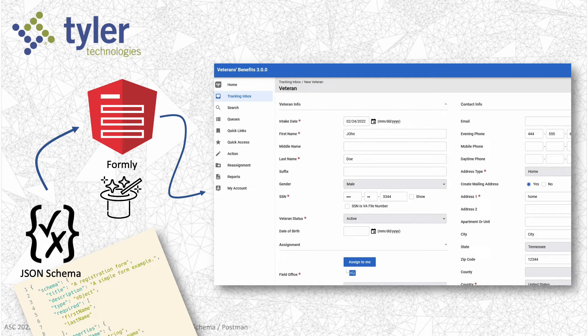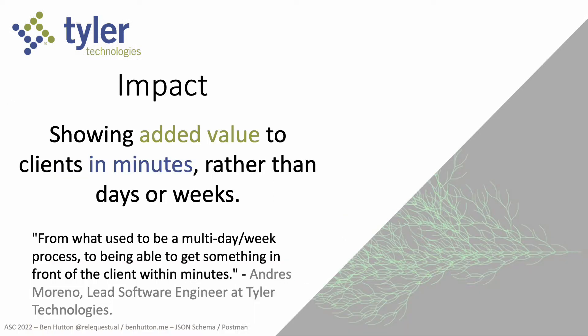Tyler could create JSON Schemas and use Formly to generate forms on the fly. Tyler's clients could also provide their own schemas for custom forms and validation rules. The next time a client needs to add a field to their form, they can do it self-service — they don't even need to call you. When you can show clients a change based on feedback during the meeting as opposed to next week, you're reducing that feedback loop. That's a sure way to impress clients and keep them happy.